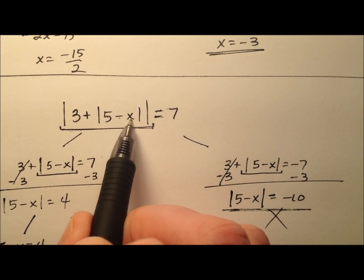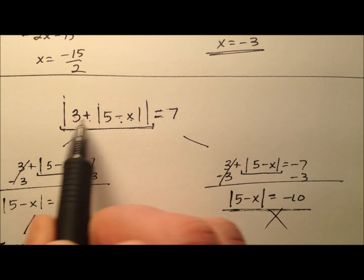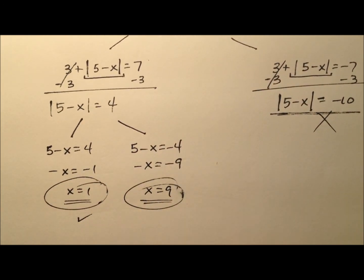So 5 minus 1 is 4. The absolute value of 4 is 4 and 3 plus 4 is 7 and the absolute value of 7 is 7. So this one works.